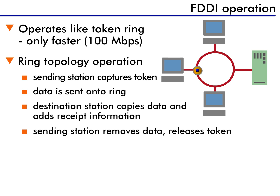The destination station makes a copy of the data on the ring and adds information to the data to acknowledge receipt of the packet. Once the sending station sees the message receipt tagged onto the end of its data, it removes its data from the token and releases the token back onto the ring.